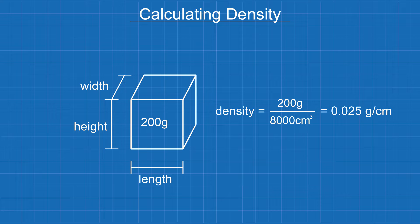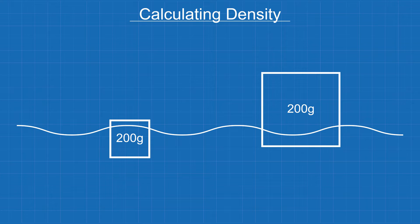If we had another block of wood that also weighed 200 grams, but this time measures 20 centimeters by 20 centimeters by 20 centimeters, then the density of that block would be much lower. Sure, both weight is the same, but the second one would float more easily on water.